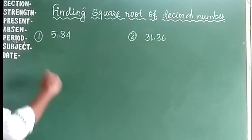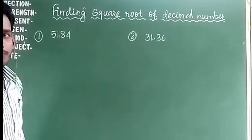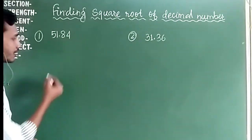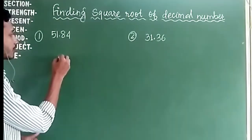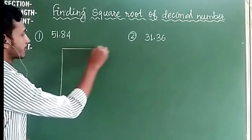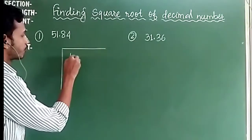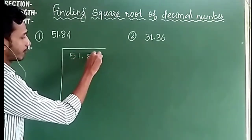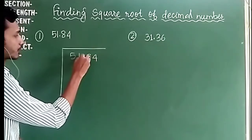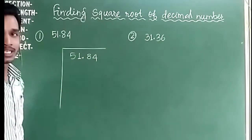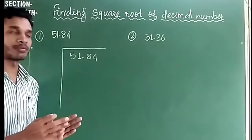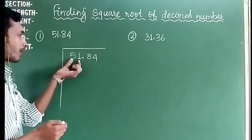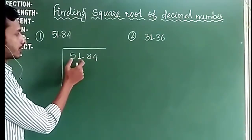So let's suppose we have 51.84. We will solve this by the division method. We will write this as 5, 1, 5, 8, 4.